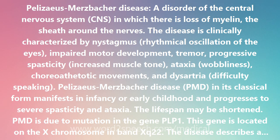PMD is due to a mutation in the gene PLP1. This gene is located on the X chromosome at Xq22. The disease follows an X-linked pattern of inheritance, with boys who have the mutation affected with the disease, while females with the mutation are carriers.